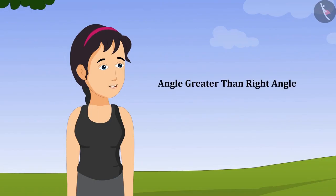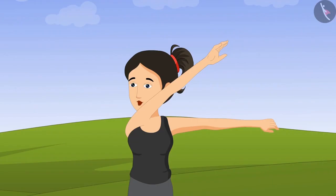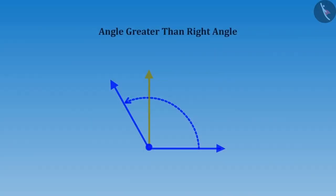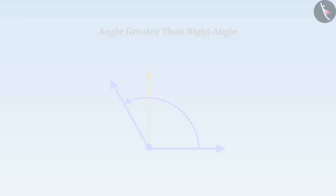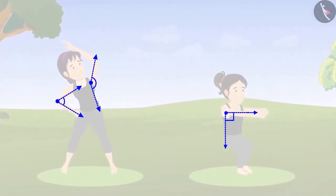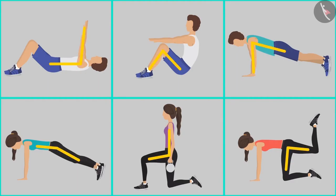Look, Didi, I have also made an angle less than a right angle. Very good, Riva. You have made an angle less than a right angle. But can you make an angle greater than a right angle? Didi, if I increase the distance between my hands longer than that of the right angle, will it become an angle greater than a right angle? Oh wow, Riva, you are absolutely right. This is greater than a right angle.